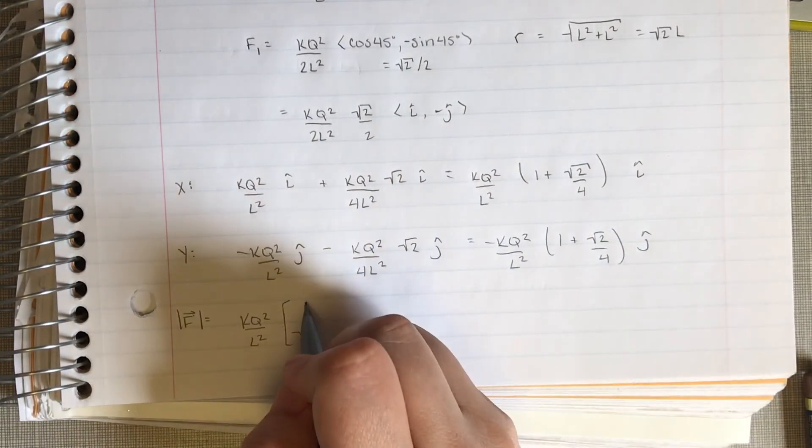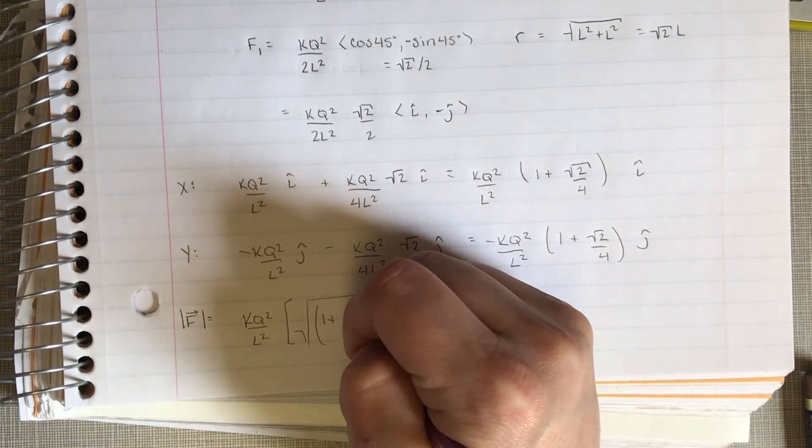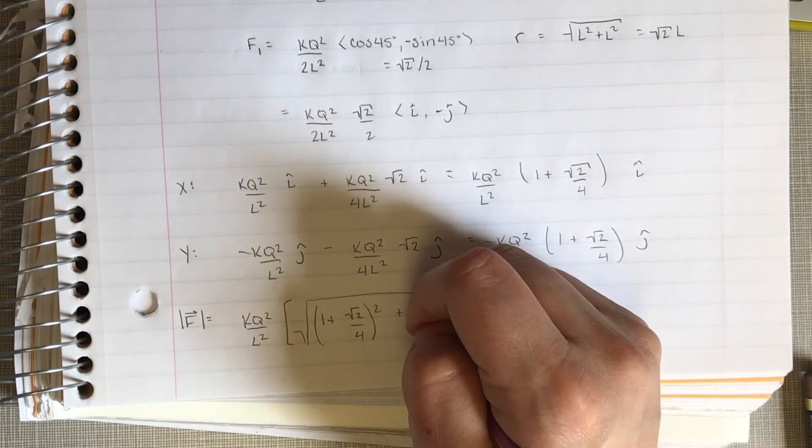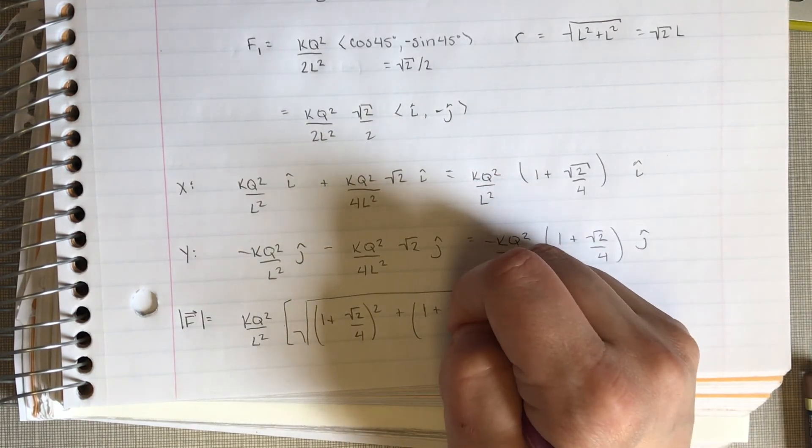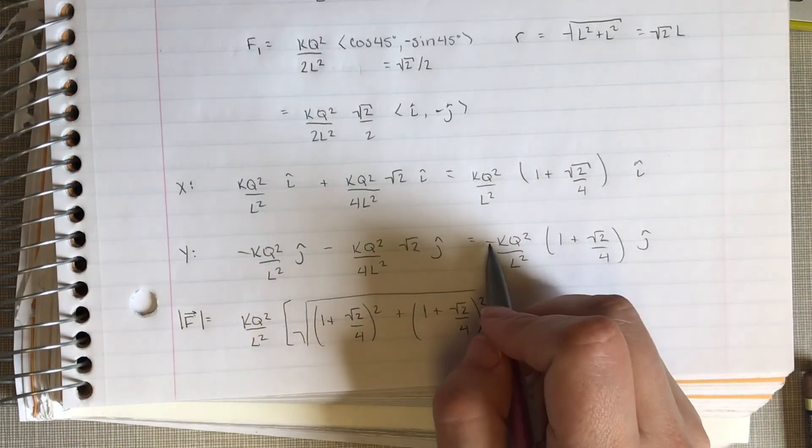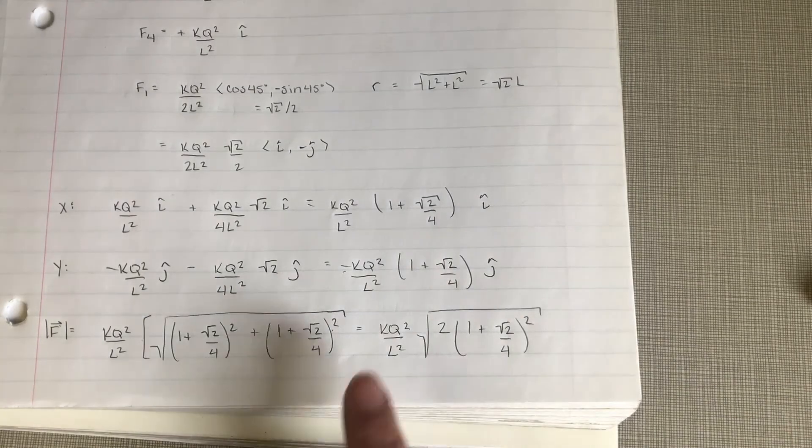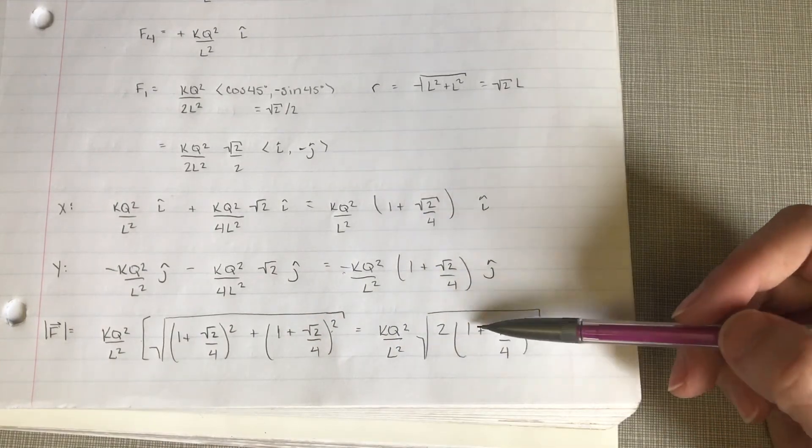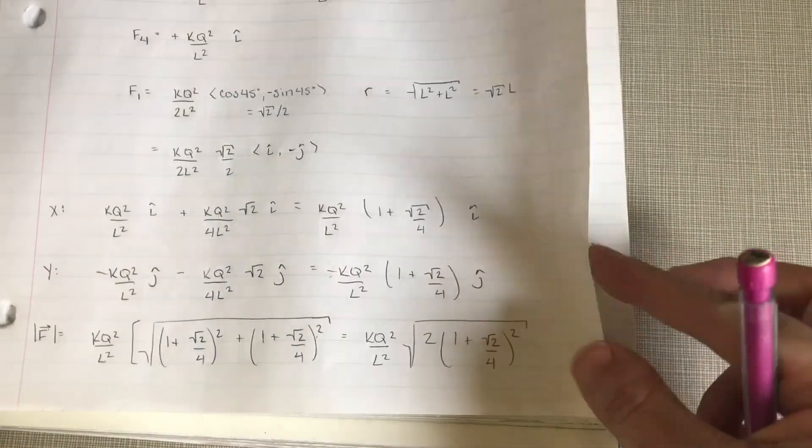So we square it and square root it. Now we have our 1 plus root 2 over 4 squared plus 1 plus root 2 over 4 squared. I said b plus a negative, but the negative gets squared so we don't care. So then we get k q squared over L squared square root of 2 times 1 plus root 2 over 4 squared. We can simplify this a whole bunch.